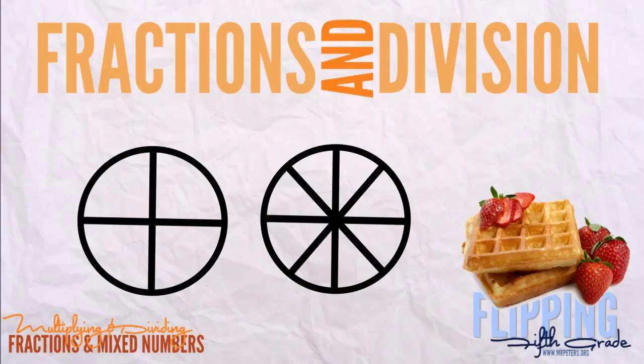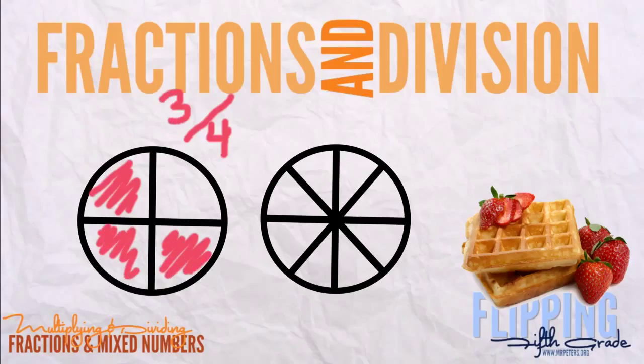So we can put our 4 as our denominator. And let's say we ate 3 out of 4. You simply would just color in your three areas here and that would be 3/4.